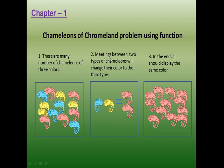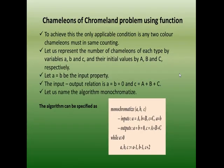There is a strategy: a meeting between two types of chameleons will change their color to the third type. That means if a blue and a yellow chameleon meet, both will change to the color of the third one — pink. If this keeps happening, at the end all chameleons should be the same color. To achieve this, the input condition is A equal to B. Here A, B, C are the counts of the first, second, and third chameleons. So any two of them must be in the same number.